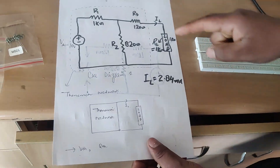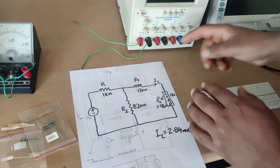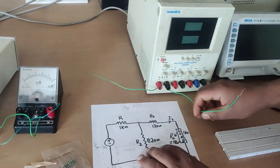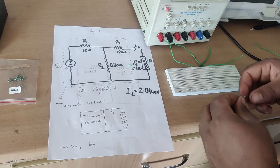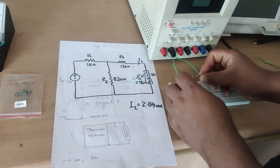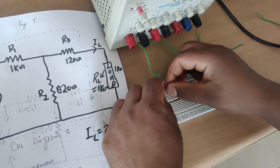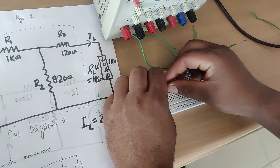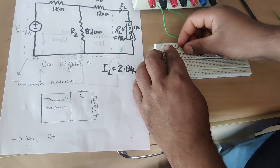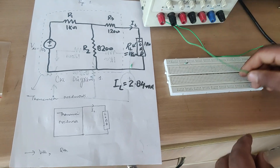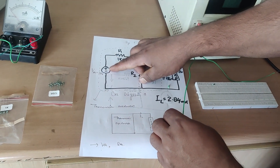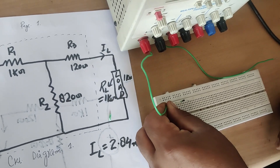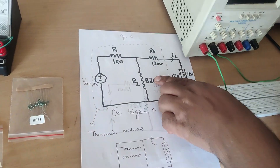Let's start framing the circuit. We have a 10 volt DC source obtained from a variable DC power supply. Let's switch on the power supply — this is the positive and this is the negative. I will connect the 1 kilo ohm resistance R1 on the breadboard, and connect the positive of the DC power supply to one end.